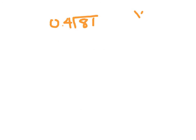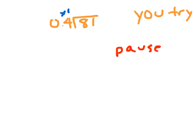Here's a problem for you to try. Set it up, hit pause, and follow the steps we talked about earlier in the video. Since there's one decimal place for our divisor, we multiply by 10 and rewrite our division problem as 810 divided by 4.